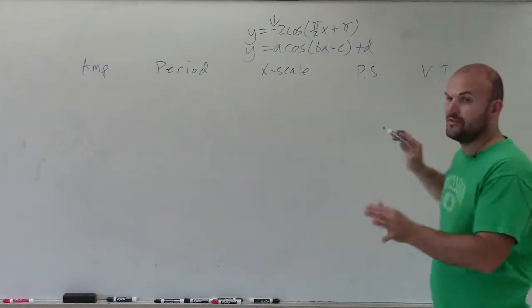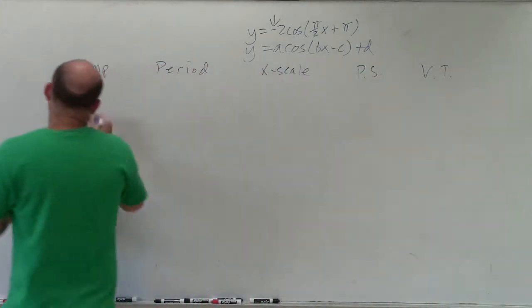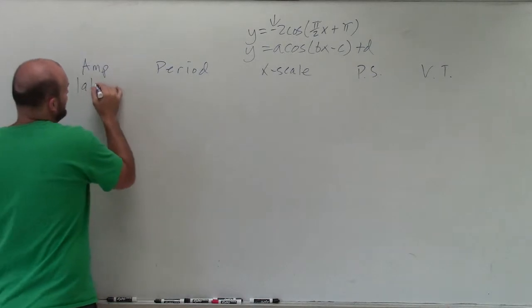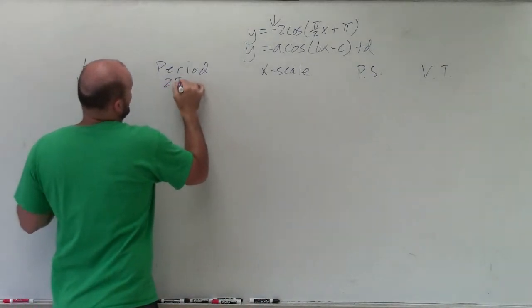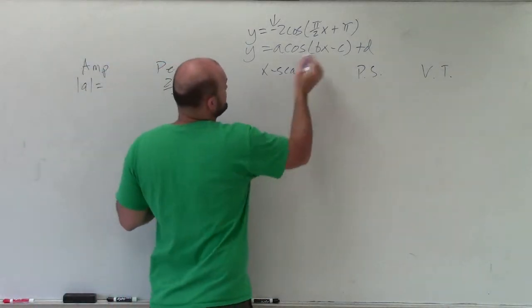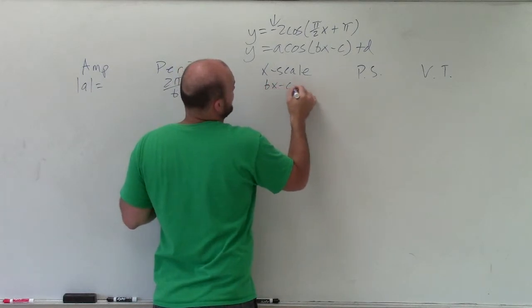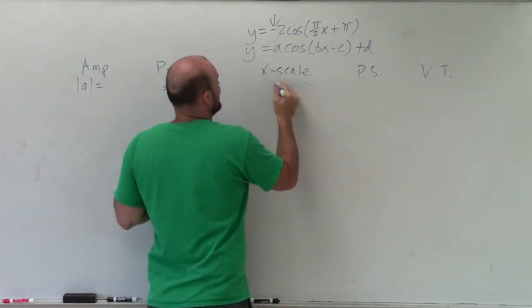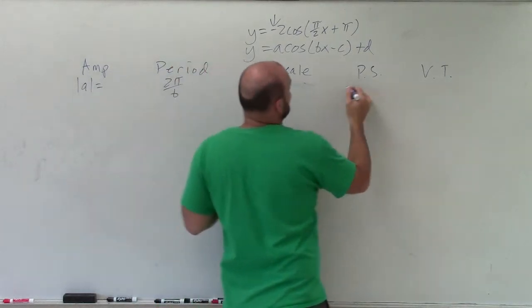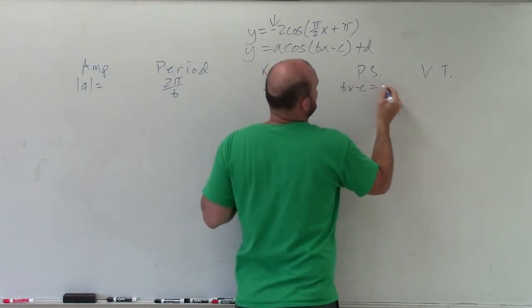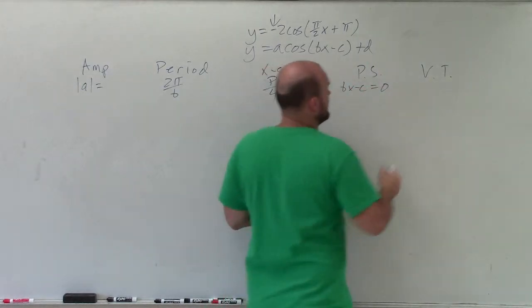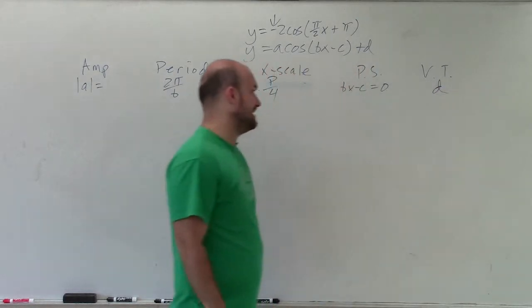So let's go ahead and figure out how to determine amplitude, which is just the absolute value of a. Our period is just going to be 2 pi divided by b. x scale is our period divided by 4. Our phase shift is what's inside of our equation or function. Set that equal to 0 and solve for x. And our vertical transformation is d.